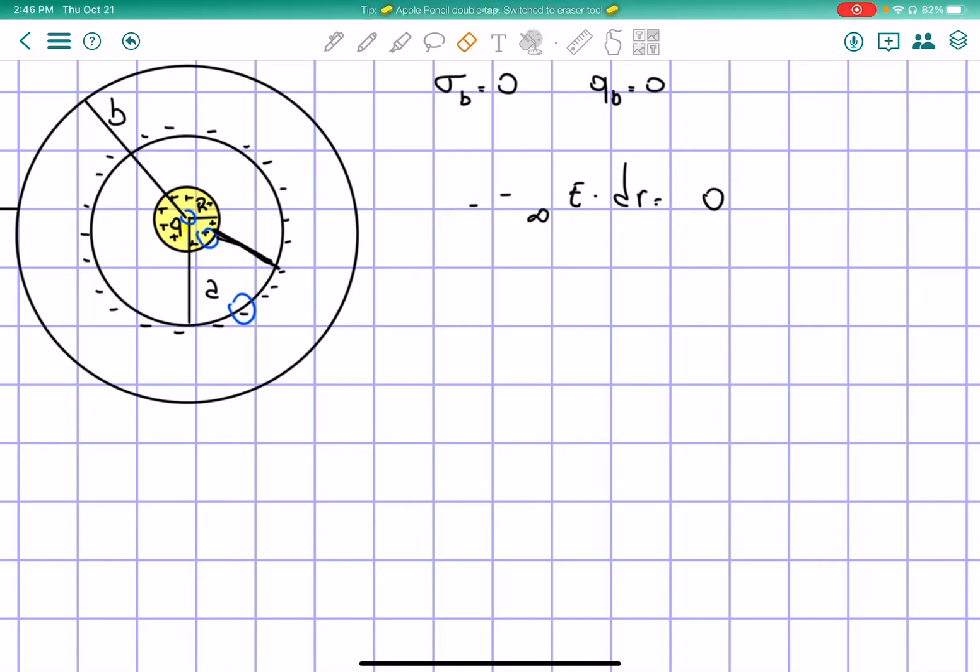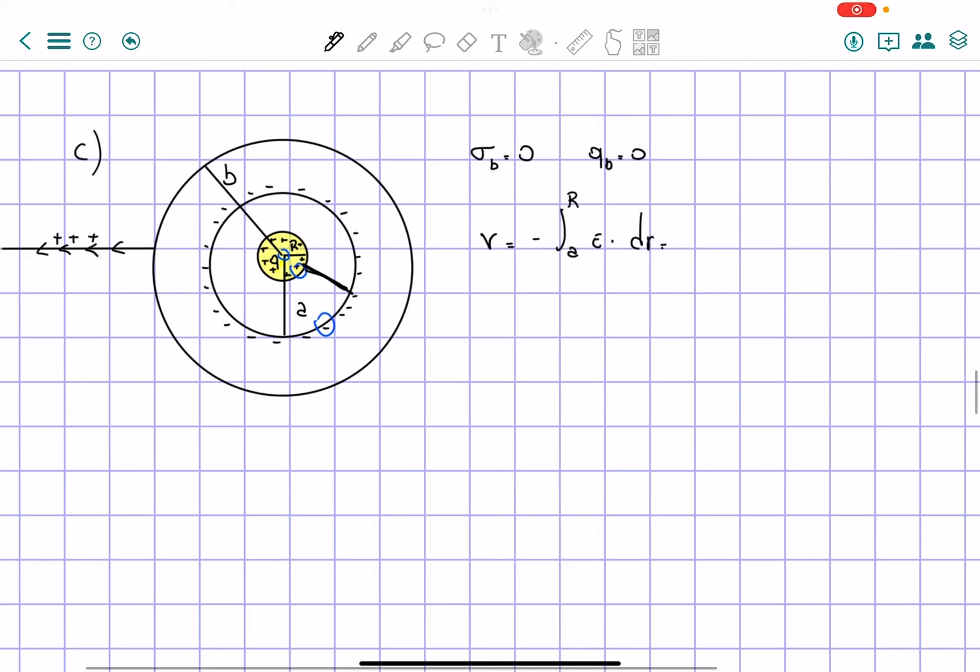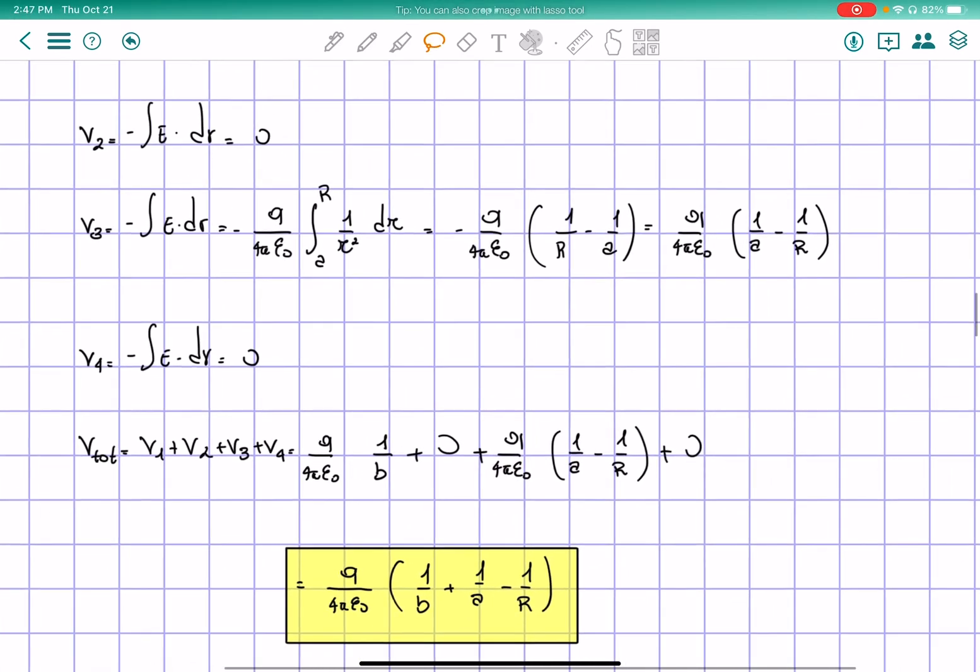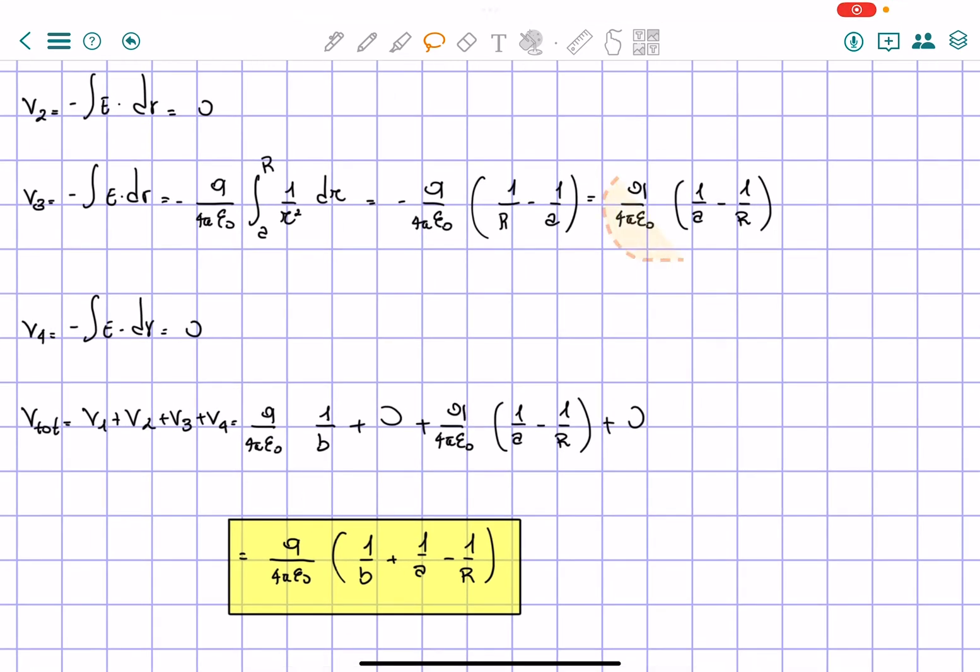So the only electric potential that will now be equal to zero will now be the one going from A to R. That, as we said previously, is going to be equal to A to R, this answer right here.